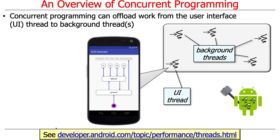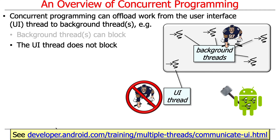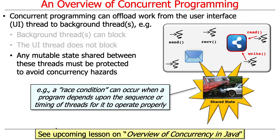Most commonly, we use concurrent programs to offload work from a user interface thread — of which there's typically one — to different background threads that do longer-running computations. Because of this architecture, background threads can afford to block since they won't perturb the responsiveness of the UI thread. The UI thread typically does not block; it stays responsive to events like cancellations. Any state shared between background threads and the UI thread must be protected to avoid concurrency hazards.